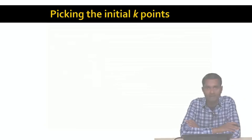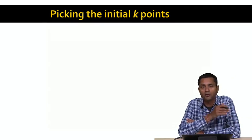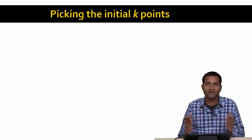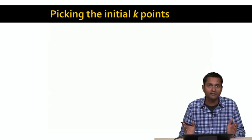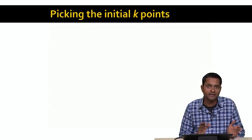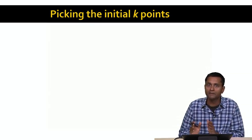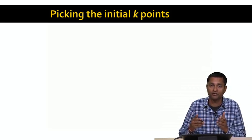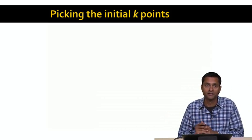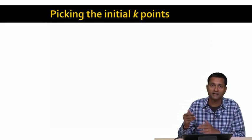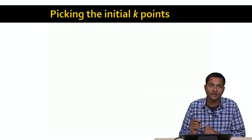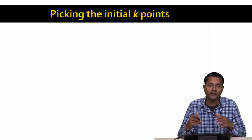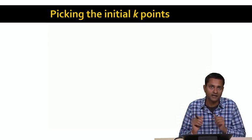The final question we need to address is picking the k initial points to initialize the k clusters. In the examples so far, we've picked the initial k points completely at random. That worked well in our example, but in general it may not. We might pick k points that all happen to be in the same cluster, in which case the final clustering won't reflect the actual clustering of the data. Or we might pick points that are outliers not near any of the real clusters. The final clustering depends on the initial k points we pick, so it's important to pick them well.